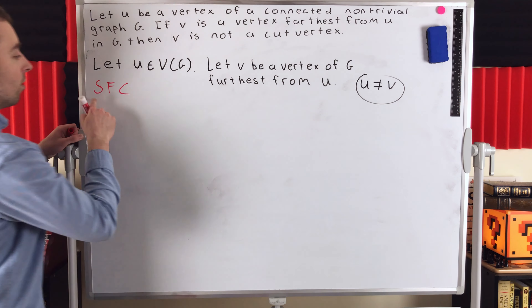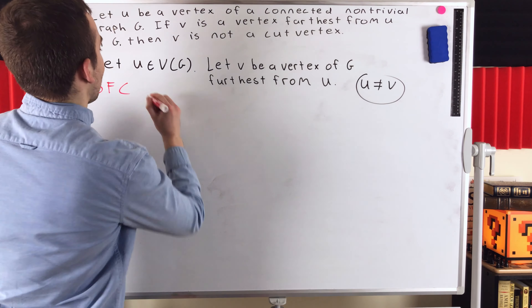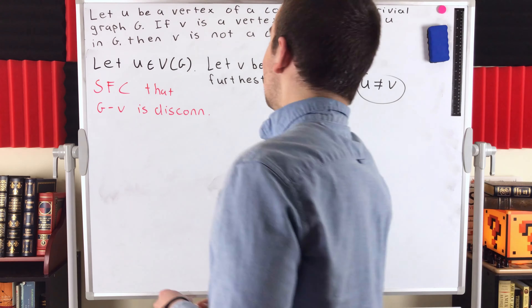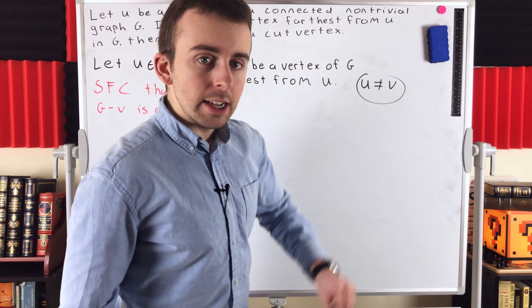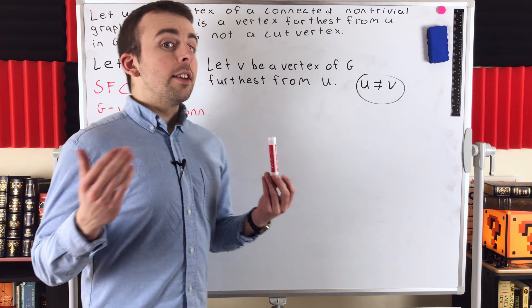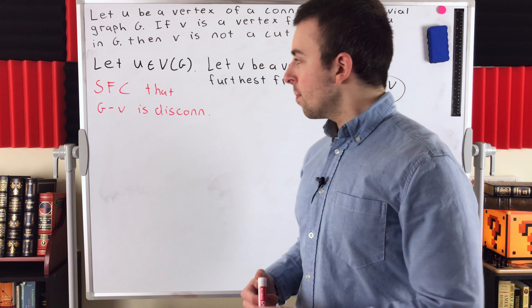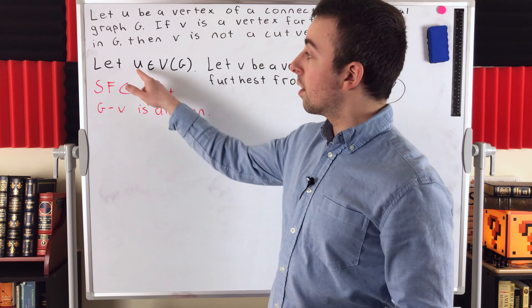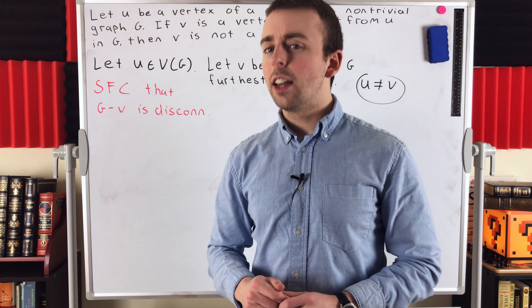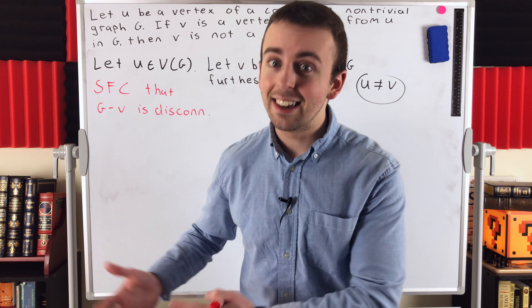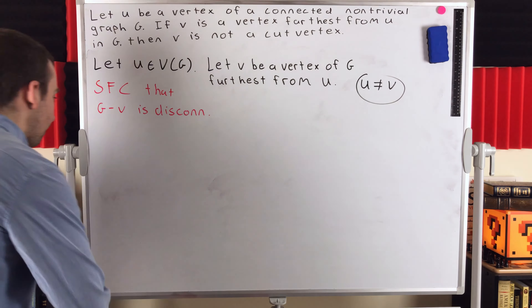We want to prove that v is not a cut vertex — that deleting v does not disconnect the graph. So we're going to suppose, for the sake of contradiction, that v is a cut vertex, which means that g minus v is disconnected. Now since u is not equal to v, we know that the vertex u is in this graph g minus v. Since g minus v is disconnected, it must have at least two components, so one of those components contains the vertex u.